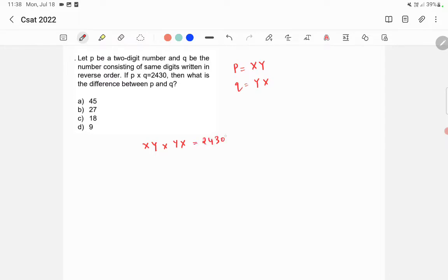So here if you see the last digit is 0. So in order to get last digit as 0, it should be 5 into 2. Then it can be 5 into 4. Right. It can be 5 into 6 or it can be 5 into 8.